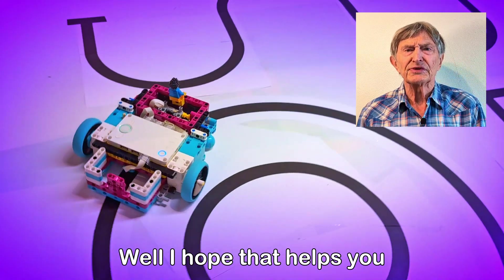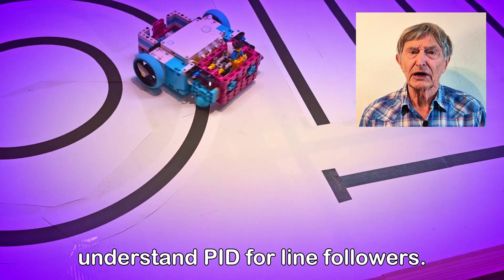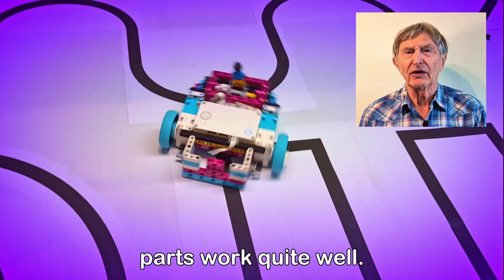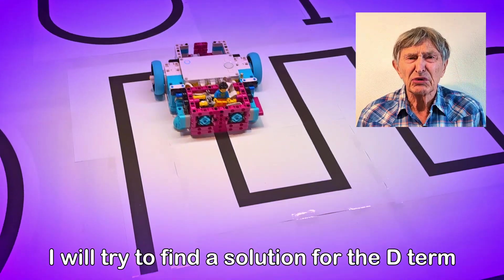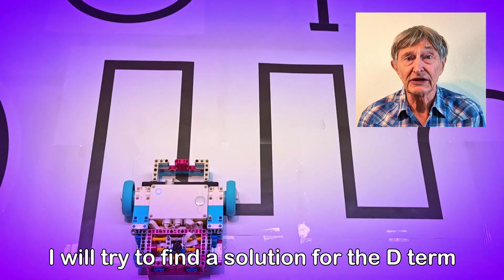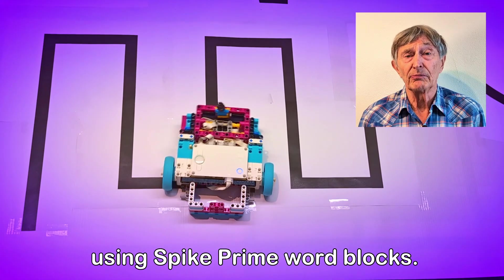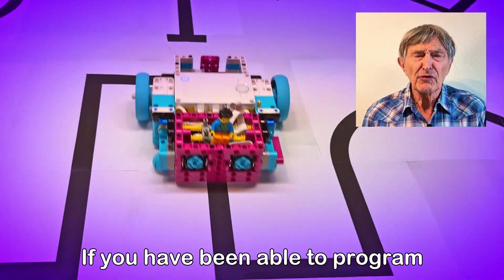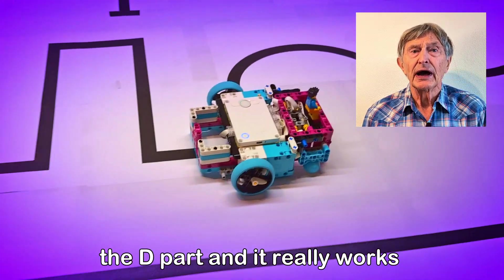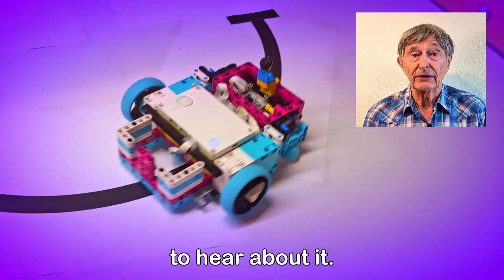Well, I hope that helps you understand PID for line followers. At least the P and I parts work quite well. I will try to find a solution for the D term using spike prime word blocks. If you have been able to program the D part and it really works, I would be interested to hear about it.